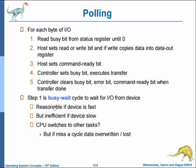In step one, the host is busy-waiting or polling — looping by reading the status register over and over until the bc bit becomes clear. If the controller and device are fast, this method is reasonable. But if the wait may be long, the host should probably switch to another task. For some devices, the host must service the device quickly or data will be lost — for example, when data are streaming in on a serial port or from a keyboard, the small buffer on the controller will overflow if the host waits too long before returning to read the bytes.